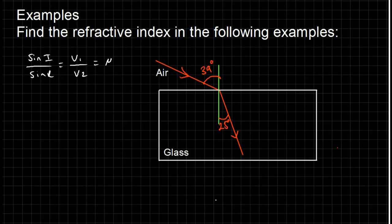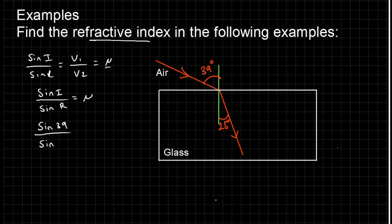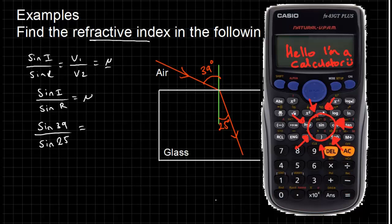What's the question asking me for? It's asking for the refractive index. I don't have the velocities, but I do have the angles, so I've got sine i and sine r. I'm just going to use this part of the equation: sine i divided by sine r is equal to mu. All I have to do is take the sine of 39 and divide it by the sine of 25. Get your calculator out and check that you know how to use the sine buttons.